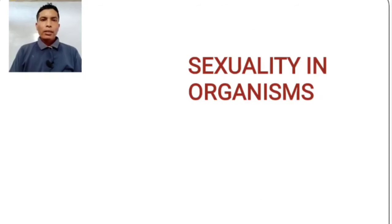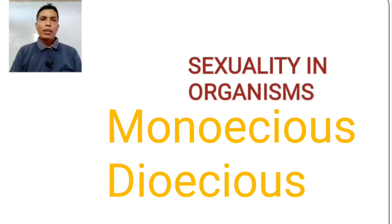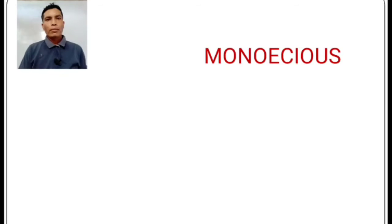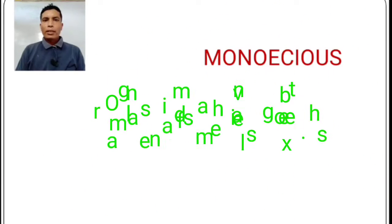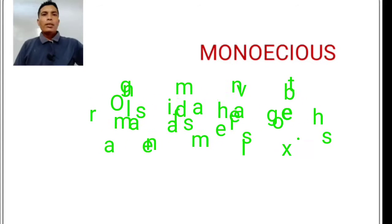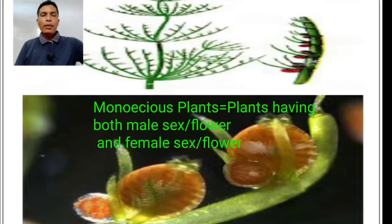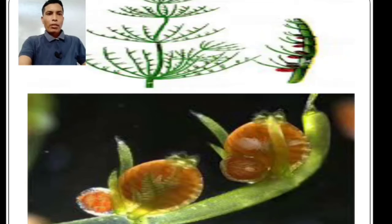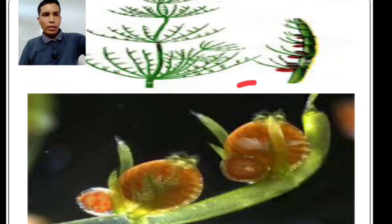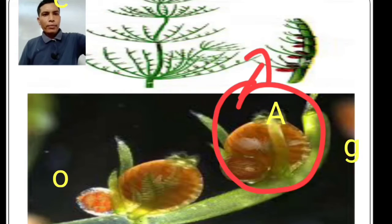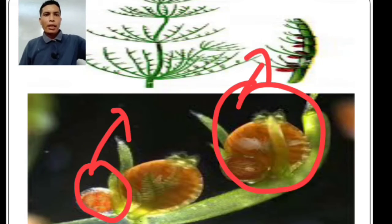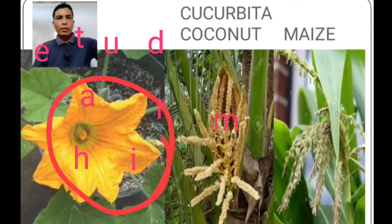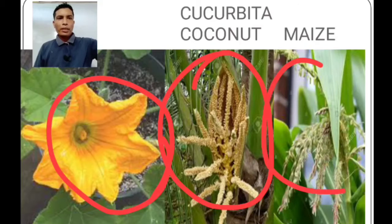Now, sexuality in organisms. There are two types: homothallic or monoecious, and dioecious. A monoecious organism has both male and female sexes. Some examples of monoecious plants are Selaginella and Cucurbita. In this picture we see the reproductive structure of Selaginella — it is monoecious because it has both male and female sexes in the same individual. The female reproductive structure is known as archegonium, and the male reproductive structure is known as antheridium. Other examples include Cucurbita, coconut, and maize flowers.